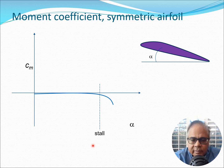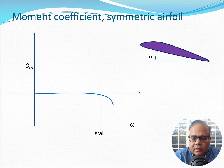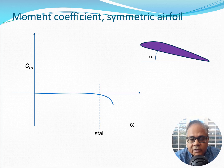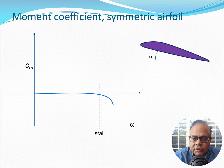For a symmetric airfoil, the moment would be quite small or nearly zero, and then it would start to come down after stall. This is one reason why symmetric airfoils are used in certain situations — we don't want moment generation because moment can lead to torsional loads or twisting loads on the wing section or on the rotor blade in a helicopter.